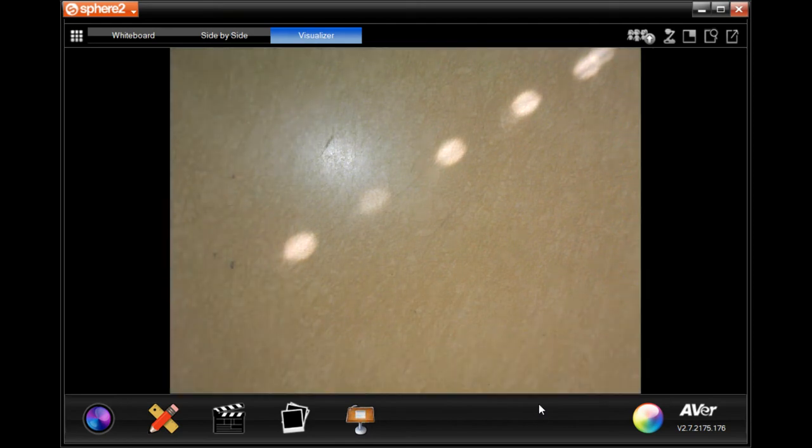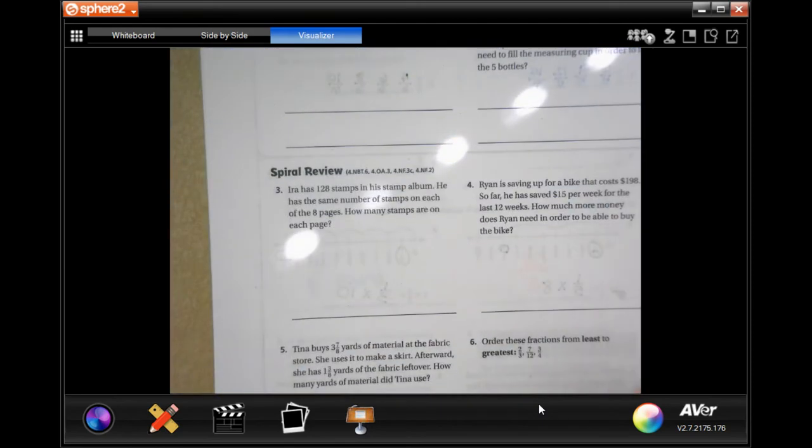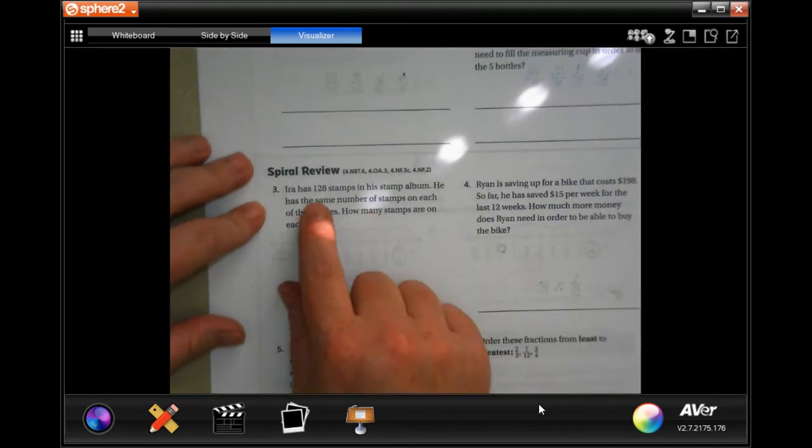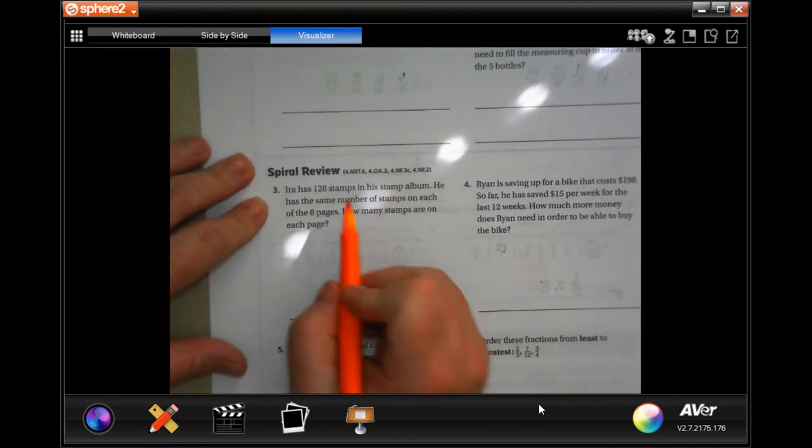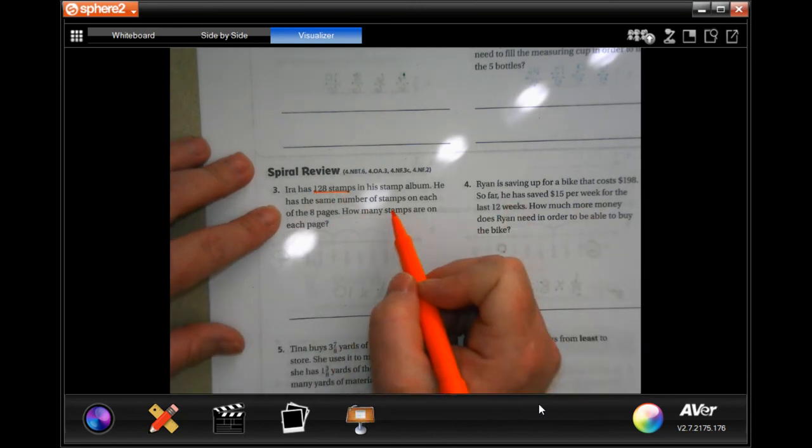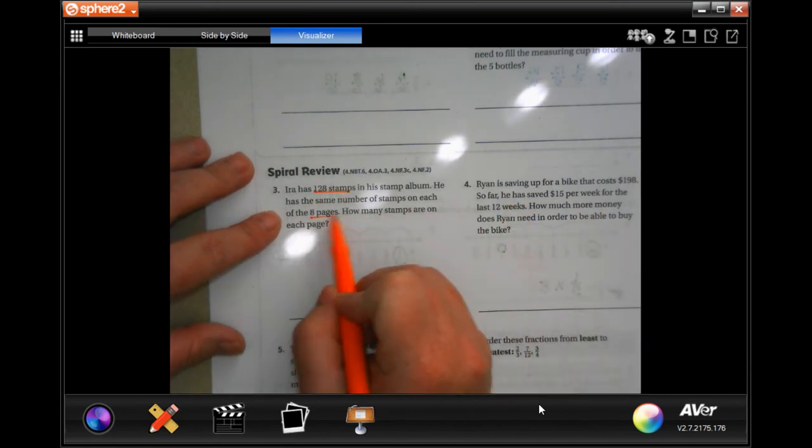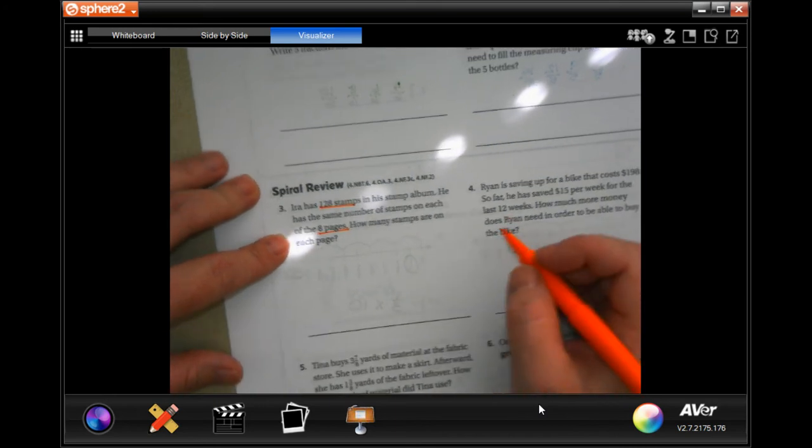Okay, all right, we're going to the back where you guys are going to do the lesson check because you're amazing and you can. And then we're gonna go down to this. For all of you, so Ira has 128 stamps in stamp collection stamp album. He has the same number of stamps on each of eight pages. How many stamps are on each page?